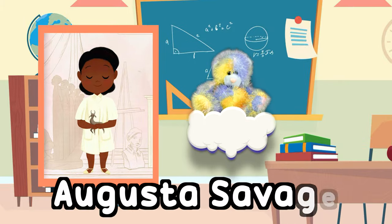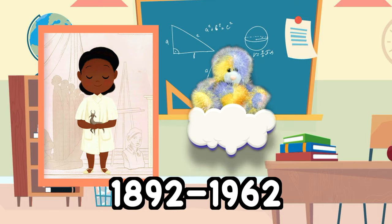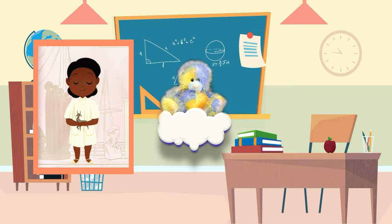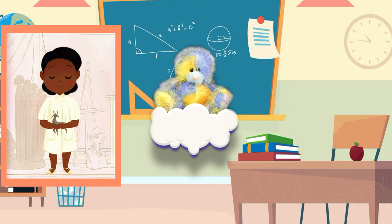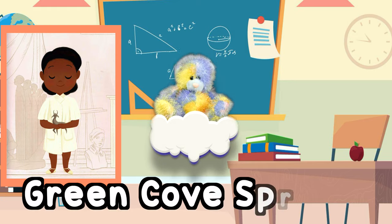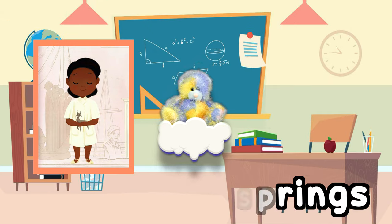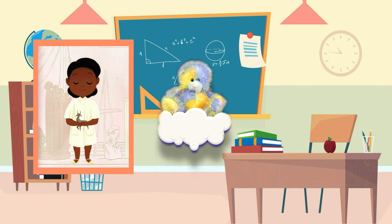Augusta Savage, born 1892 to 1962. She was an educator and a sculptor. Augusta grew up in a poor family with 13 brothers and sisters in Green Cove Springs, Florida. Thirteen brothers and sisters? Wow!